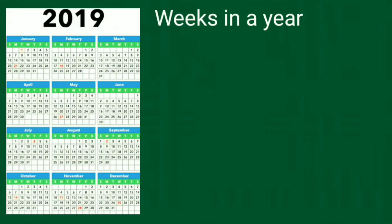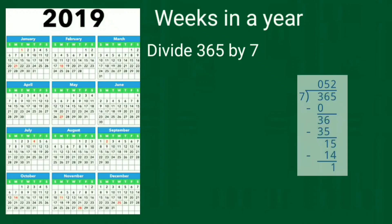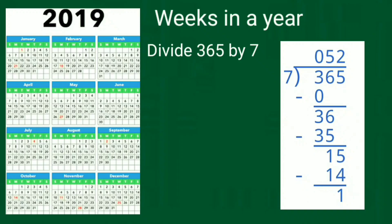Now, students, see how many weeks are in a year. There are 365 days in a year. To find out the weeks, we divide 365 by 7. On division, we get 52 as the answer and the remainder is 1. So, there are 52 weeks and 1 day in a year.